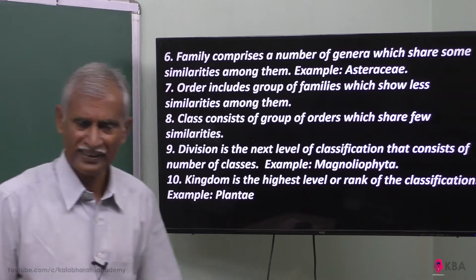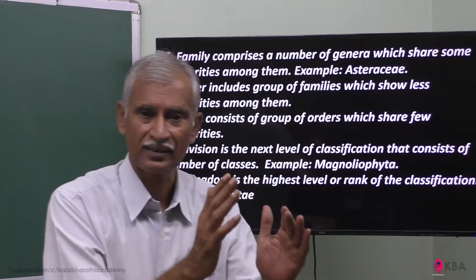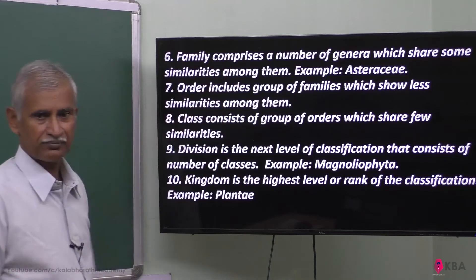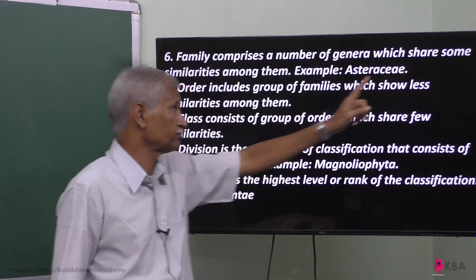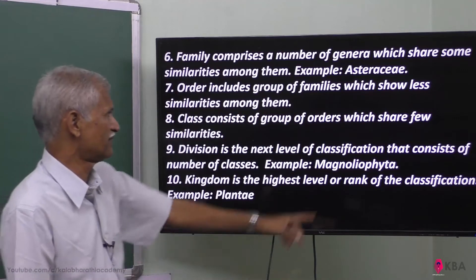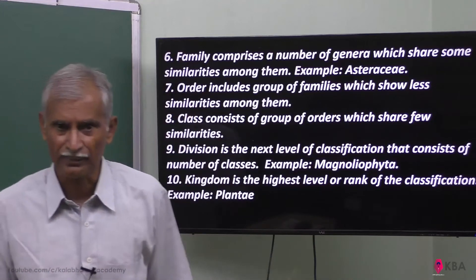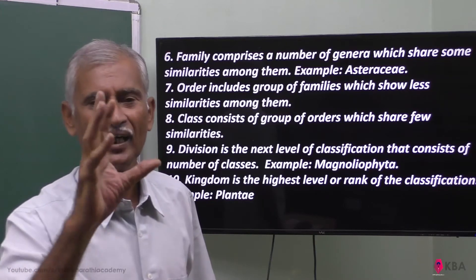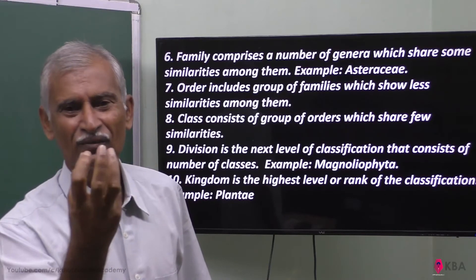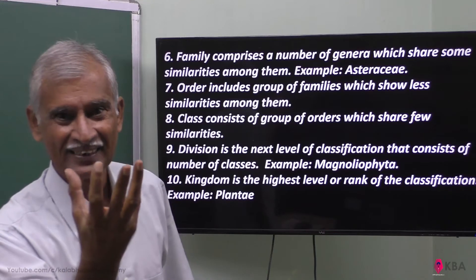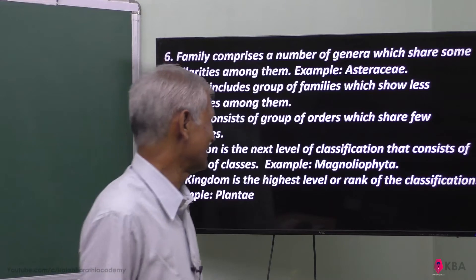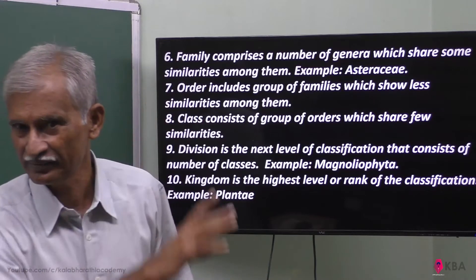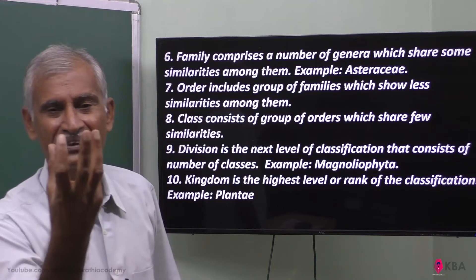What is a family? A number of genera together makes a family which has got some similarities. Family comprises a number of genera with shared similarities among them. Here is the example: Asteraceae is a family. Asteraceae is a cluster group — it is a family that has got the same character of cluster flowers.